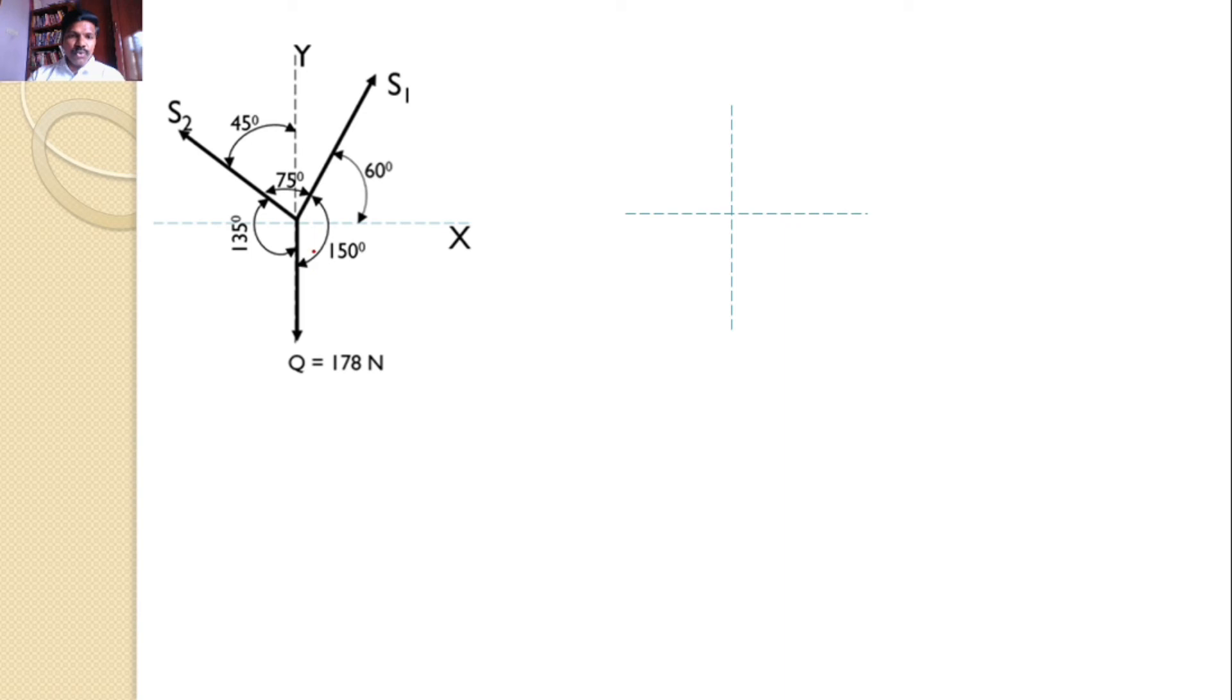Now, this is the free body diagram at point B. There are three forces Q, S1, S2, and all the angles are mentioned: 150, 75, and 135.